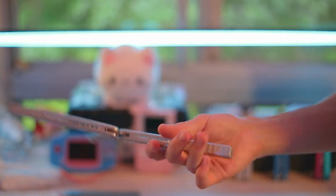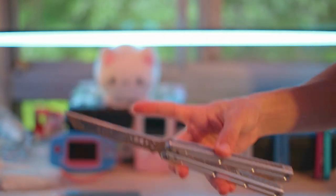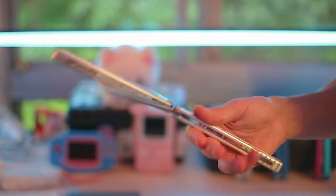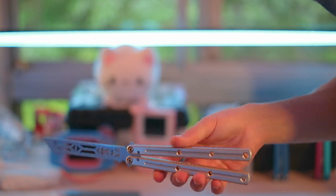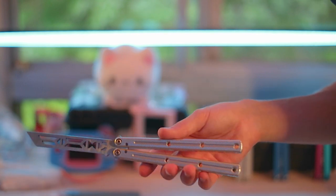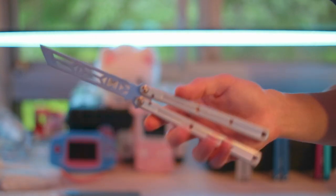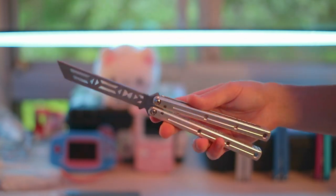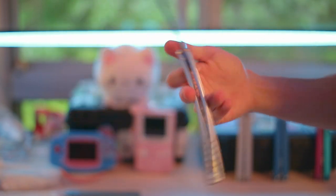It's like the gold standard of balisongs. It's got 7075 aluminum channel handles, you've got a steel blade, it's in the $150 to $200 price range, depending on whether you get it secondhand or whatever. It's just all around a good, classic, boring, old, regular balisong.